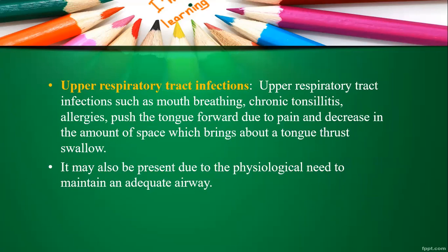Regarding upper respiratory tract infections — examples include mouth breathing habit, chronic tonsillitis, and allergies — there is a tendency for the tongue to push forward due to pain and decreased space, bringing about tongue thrust. This may also present due to the physiological need to maintain an adequate airway. If there is no proper adequate airway, the tongue will gradually position itself to provide one.